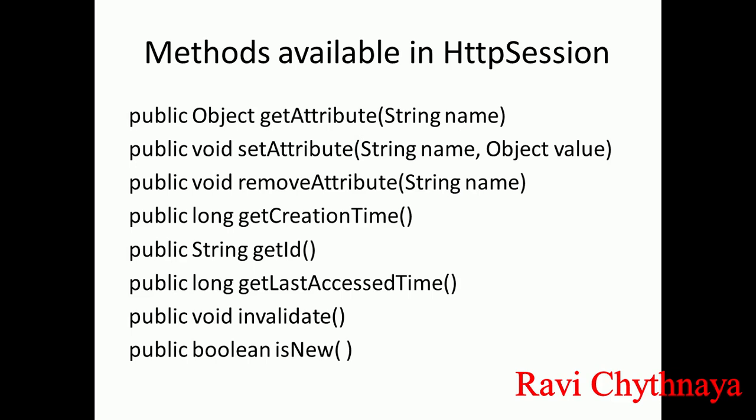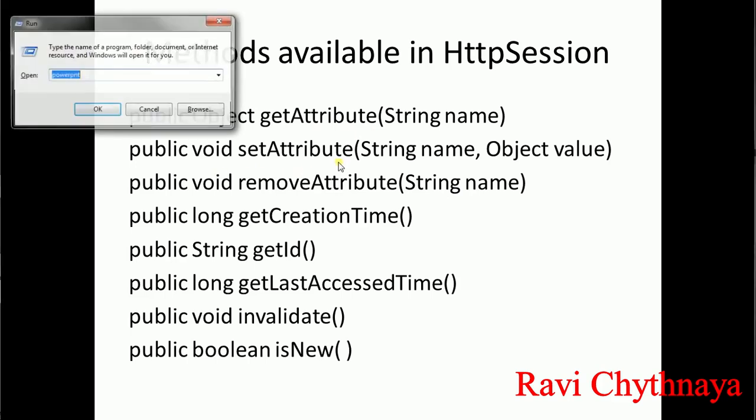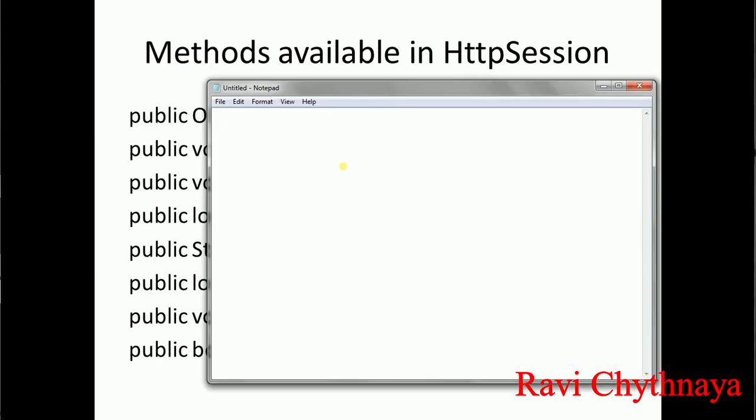The isNew method is used to check whether the user is new to the session or not. If they are new to the session it returns true, and if not it returns false. By using this we can find out whether the user is accessing the website for the first time or has accessed it before. These are the methods available in the HTTP session, and in our example we are going to use getAttribute and setAttribute. Our example is going to contain two files: login.jsp and counter.jsp.